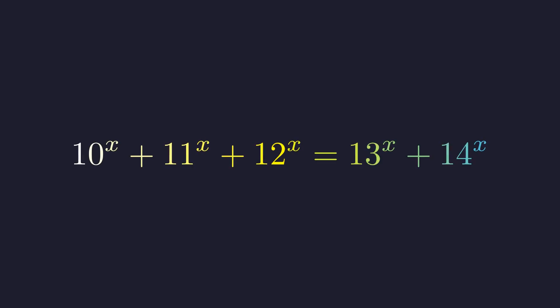Here's an equation that looks intimidating at first glance. We have x appearing in the exponent of five different bases, and our job is to find all real values of x that make this statement true. What makes this problem fascinating is that beneath this apparent complexity lies a surprisingly elegant structure.